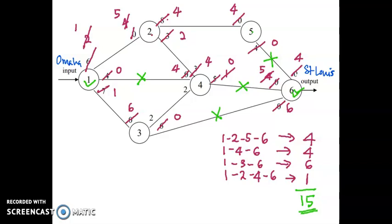Total up the values: 4 + 4 + 6 + 1 = 15. Based on this network, the maximum flow from the origin to our destination is 15. Depending on the problem — if, say, each unit represents 100 railroad cars — then the total would be 1500.